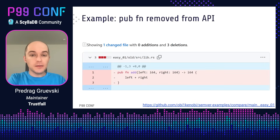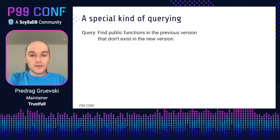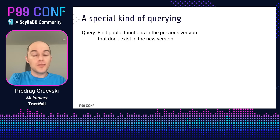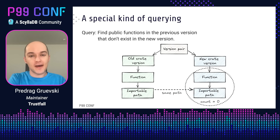Let's use a simple example. Say we've removed a public function from a library's API. This is of course a breaking change. And if we run Cargo Semverchecks, it will helpfully point that out. It says that a publicly visible function is no longer importable by its prior path, and it gives us the name of the function and its previous location in our source code. The way this is implemented under the hood is via a query. We look for functions that existed in the previous version of the API but no longer exist in the new version. If we represented this as a diagram, it would look something like this: we have a pair of versions we're considering, and for each function in the old version, we look up its importable path, then attempt to match it to a function in the new version at the same path. If no such function exists, then we found our breaking change.